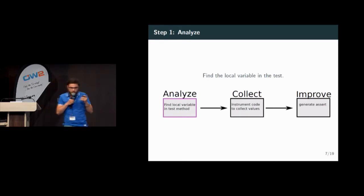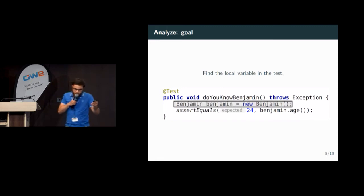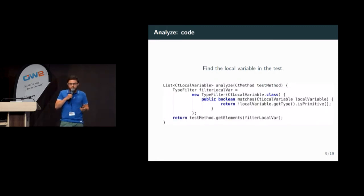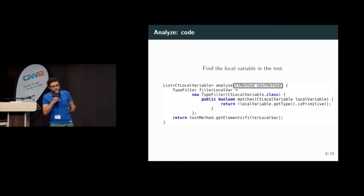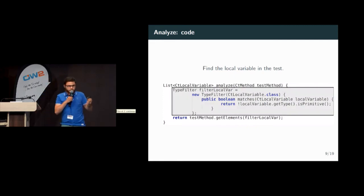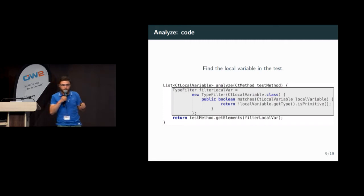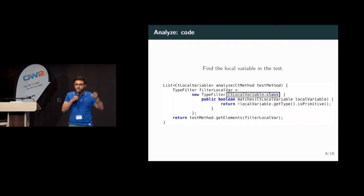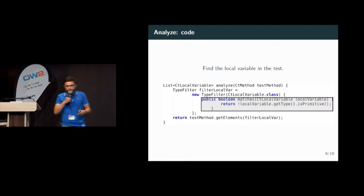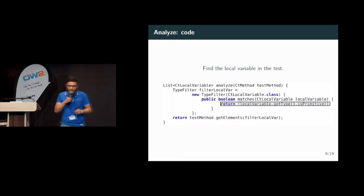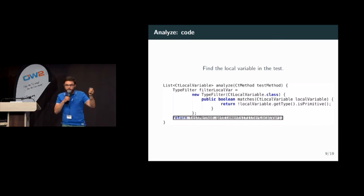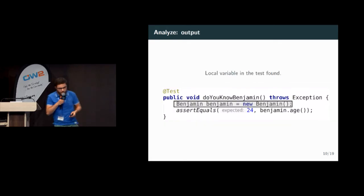Let's go through the first step — finding the local variable in the test. We use this snippet of code. The input is a test method. We define a TypeFilter to filter all elements of the test method, typed with local variable because we want only local variables. We override the matches method to select only non-primitive local variables. We get all elements of the test method according to the TypeFilter, and the output is myself — we found me inside the test.